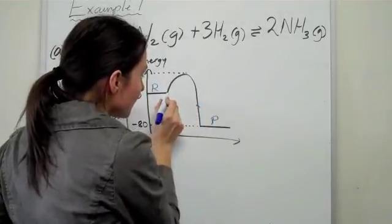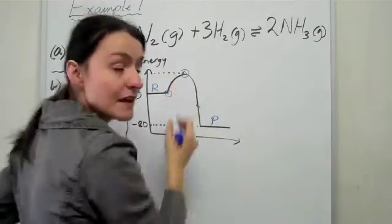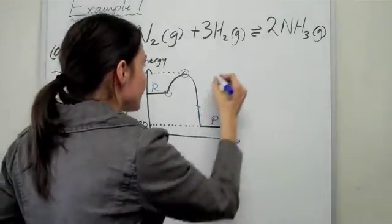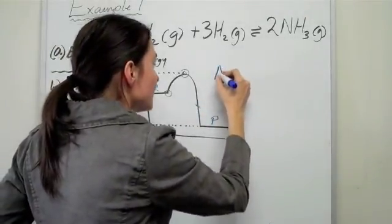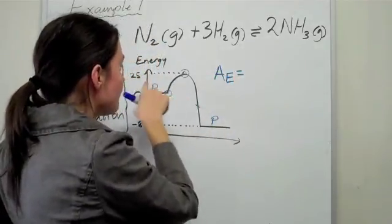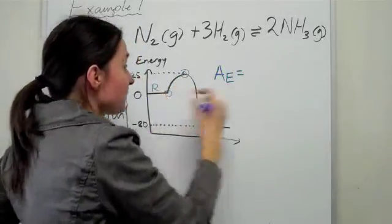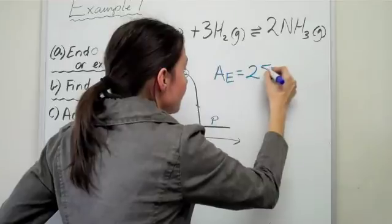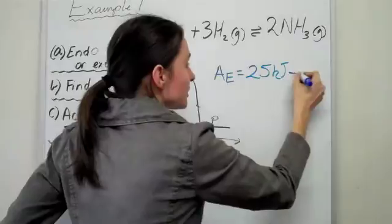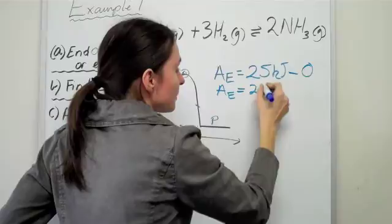So as you can see, from around about here, from that point to about there, that was the actual investment of energy that needed to be inputted into this equation. So that is known as the activation energy. Activation energy, AE, is equal to, activation energy is always positive. So it's the final energy, take away the initial energy. So it's 25 kilojoules, which was your final, take away your very initial, so take away zero. So obviously, the activation energy is just 25 kilojoules.